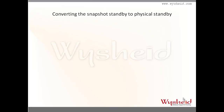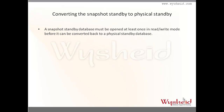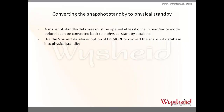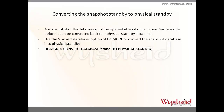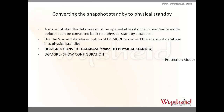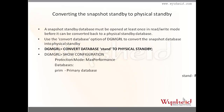To convert a snapshot standby database back to a physical standby database using DGMGRL, first ensure the snapshot database has been opened at least once in read-write mode. Then use the 'convert database' command of DGMGRL: convert database stand to physical standby. Once converted, you can verify using 'SELECT database_role FROM V$DATABASE' or the 'show configuration' command in DGMGRL — which will show 'stand' is again a physical standby database.